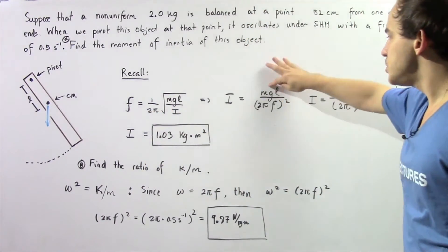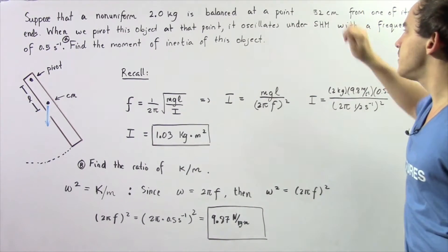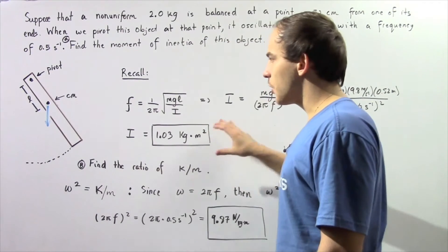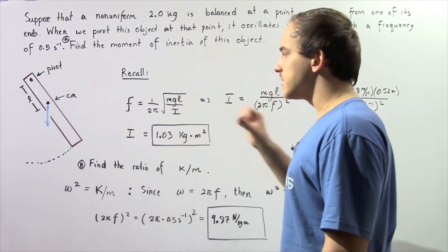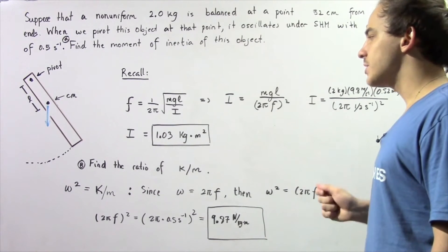We know what mgl is: 2 kg times 9.8 m/s² multiplied by 0.52 m. We take this quantity and divide it by the square of 2π times the frequency, which is 2π times 0.5. Plugging that into our calculator, we find that the moment of inertia of our physical pendulum is 1.03 kg·m².